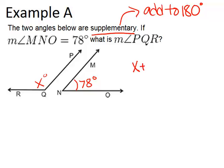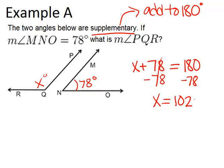We know the two angles, X and 78, have to add to 180 degrees. I can set up this equation and then solve it using algebra to get my answer. By subtracting 78 from both sides, I get that X has to be 102 degrees.